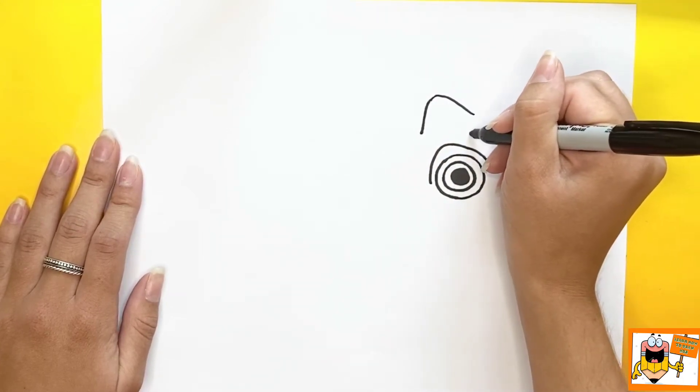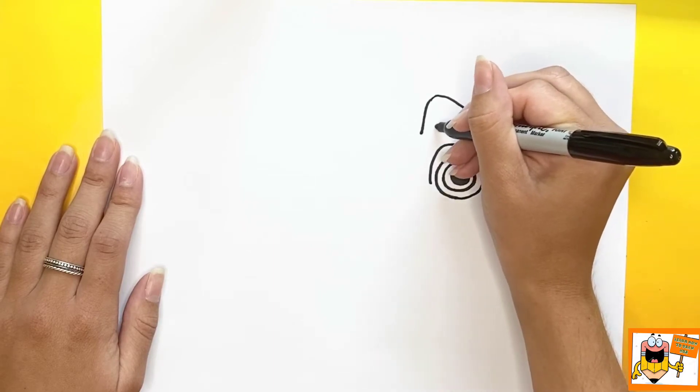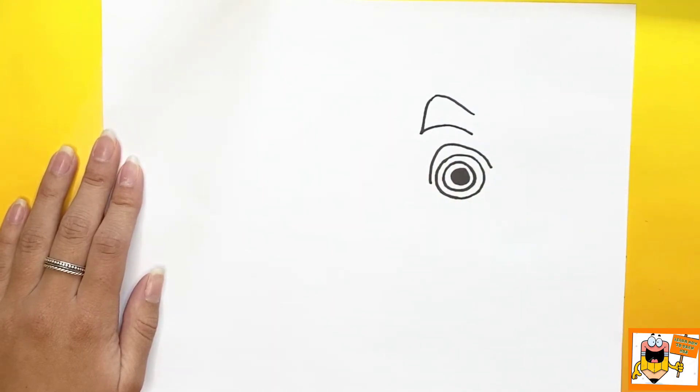Next we're going to start making a curved line between the eye and the triangle like shape we just made. Then we're going to bring that all the way over around the left side of the eye and down below the eye.